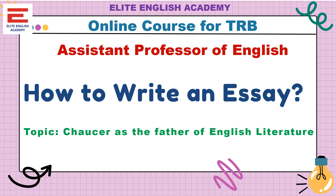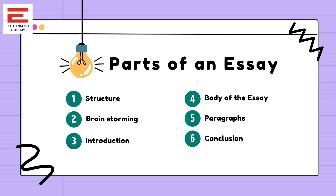First, you have to understand the structure of the essay. If you take the structure of the essay, it will have an introduction, then a body, and a conclusion — these are the three parts of any essay. In the introduction, you will have the author's name and justify the title in the very first line itself. If required, you will add the author's details and some other details.